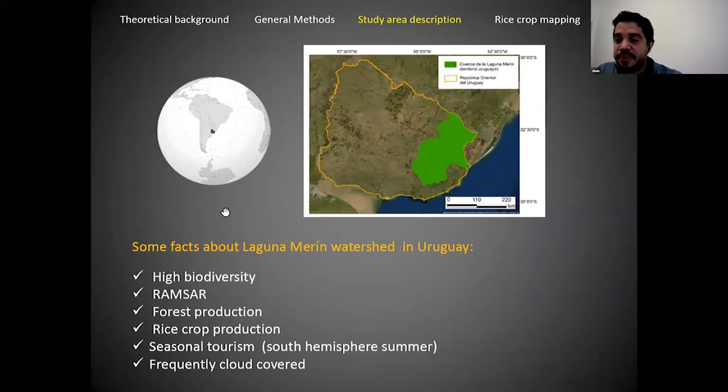Let's describe factors of Laguna Merin watershed. Laguna Merin has high biodiversity with Ramsar areas. It's also important for the economy in Uruguay with forest production for wood, rice crop production, and seasonal tourism specifically for southern hemisphere summer.